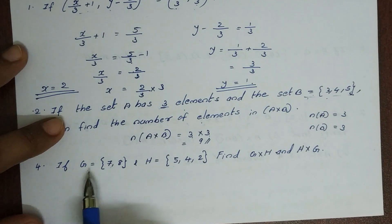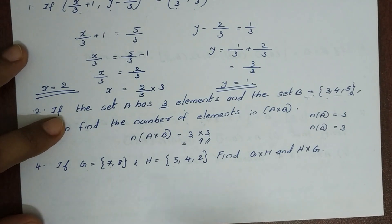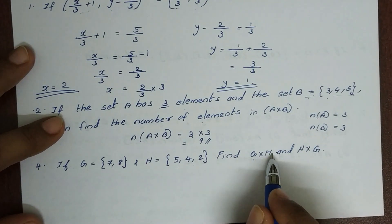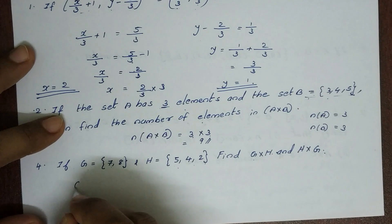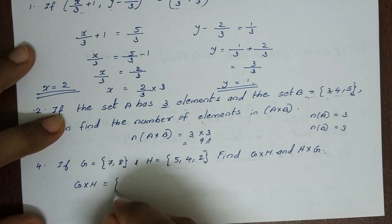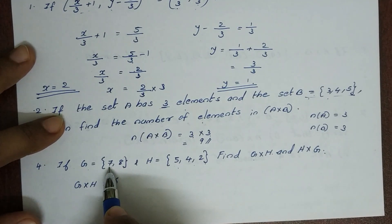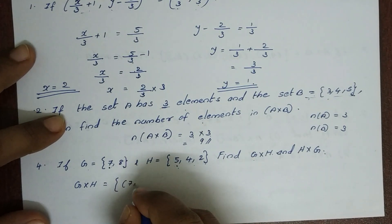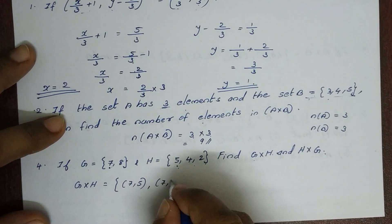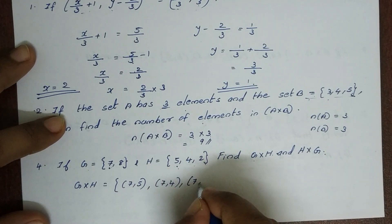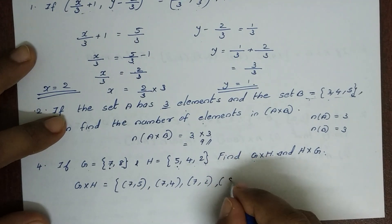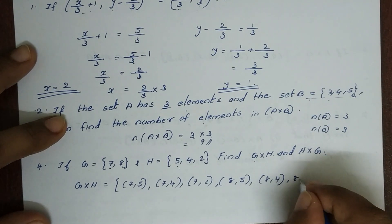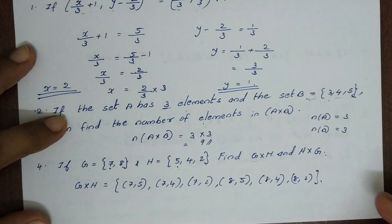Fourth problem: if G = {7, 8} and H = {5, 4, 2}, find G×H and H×G. For G×H, G has 2 elements and H has 3 elements. We pair each element of G with H: (7,5), (7,4), (7,2), then (8,5), (8,4), (8,2).